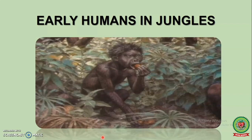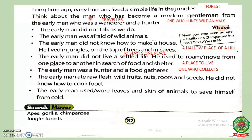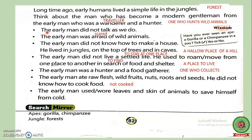Here you can see the early man in the jungle. Think about how the early man, who was a wanderer and a hunter, became a modern gentleman. Underline 'wanderer' — write its meaning: 'one who hunts wild animals.' The early man did not talk as we do.